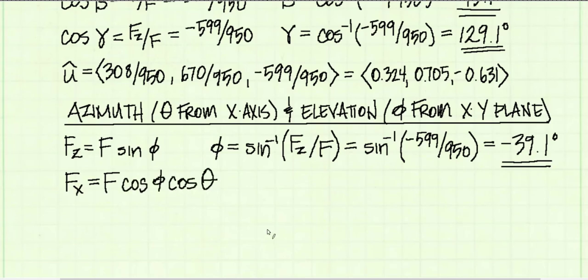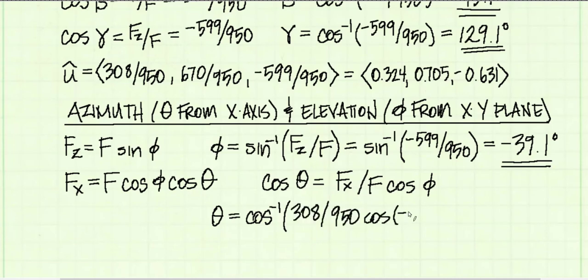Here's another relationship from the slide we just looked at. It says the force component in the x-direction is equal to the magnitude times the cosine of phi times the cosine of theta. We can use this equation to solve for theta, since we know all the other variables. Solving for theta, I get 65.3 degrees.